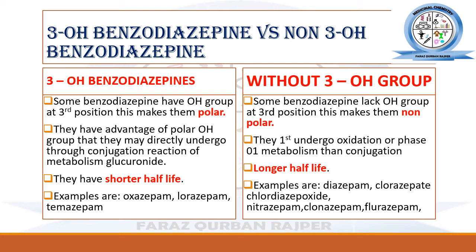The trick to draw the structure of oxazepam, lorazepam, and temazepam is: first draw the basic ring nucleus of benzodiazepine — two benzene rings and one diazepine ring — then place the carbonyl group at the second position, the hydroxyl group at the third position, and the chlorine at the seventh position.